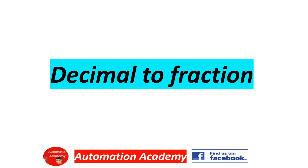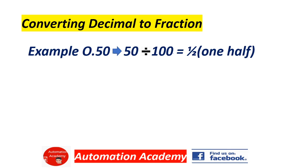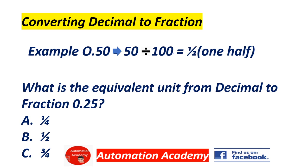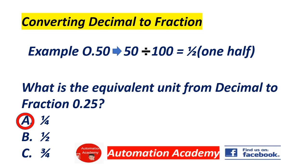Our next topic is Decimal to Fraction. Converting decimal to fraction — example: 0.5 is 50 divided by 100, which equals 1/2. Example question: what is the equivalent fraction of the decimal 0.25? A) 1/4, B) 1/2, C) 3/4. Answer: A, 1/4.